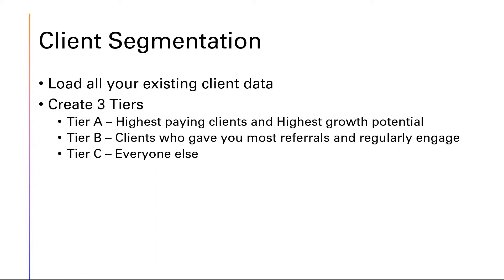Here's how you do it: Tier A clients are your highest paying clients with the highest growth potential — clients who are growing very fast, maybe not paying you the highest amount right now, but growing rapidly. Tier B clients are those who gave you the most referrals in the past and who regularly engage with your campaigns — loyal clients who recommend you. Tier C is everyone else. Once you segment your clients, you'll find new ways to serve them better, faster, and cheaper, and increase revenue from each. Load all your existing client data into the system first. That's step one — use CRM for client segmentation.